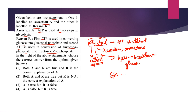Glucose is partially broken down into pyruvic acid. Glucose is a 6-carbon compound being broken down into a 3-carbon compound. During this process, there are several steps where ATP is utilized and some steps where ATP is released. To answer the question, we need to know what steps are involved in glycolysis.